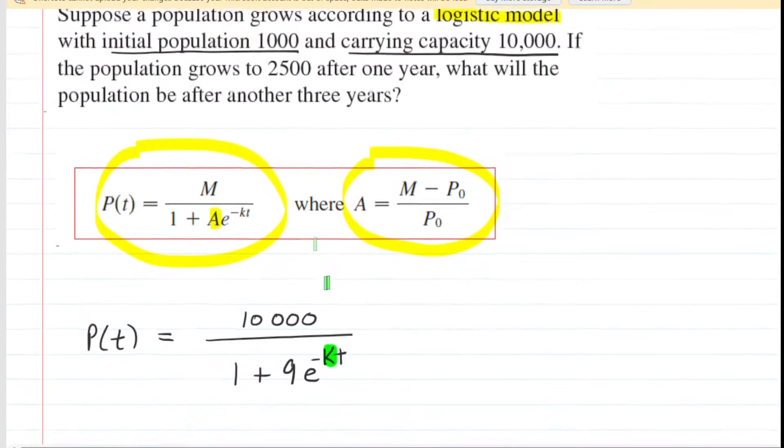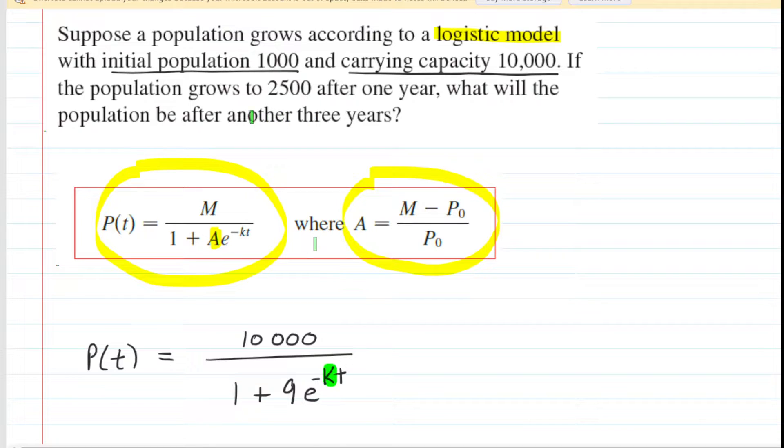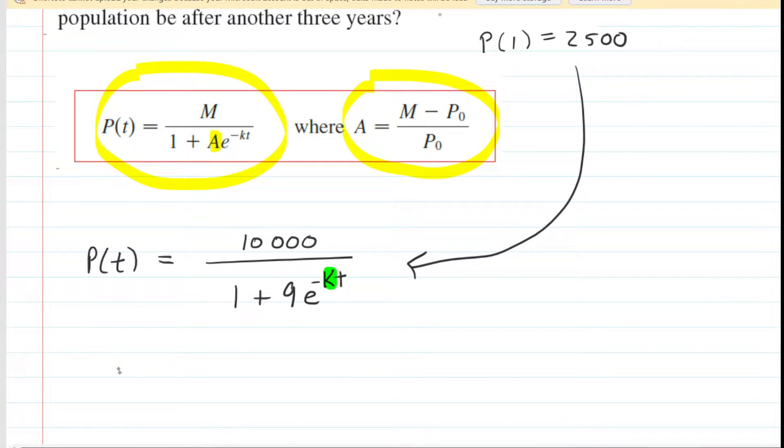And we can do that by looking at a so-called initial condition. For example, the question notes that the population grows to 2,500 after one year. So this means that the population at a time of one year is going to equal 2,500. So we're going to take those data and plug them into our logistic model. So basically, the P of T becomes 2,500, and then the value of T will become 1.